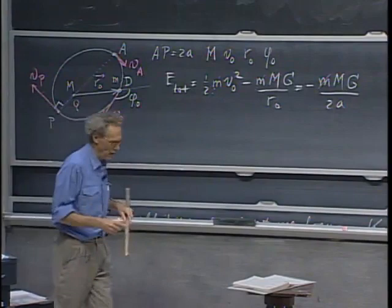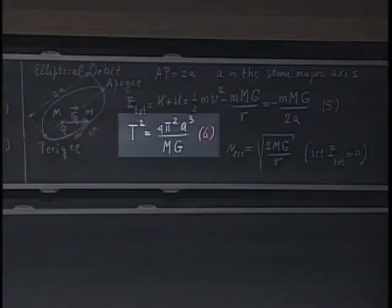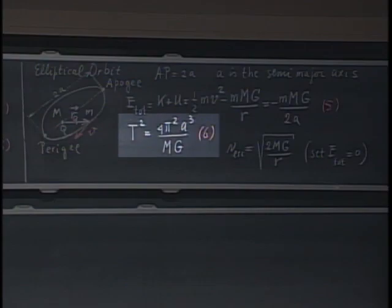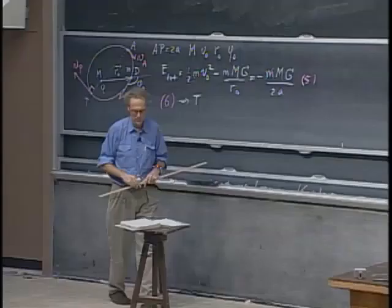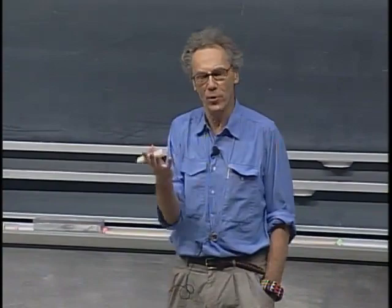Once you have A, apply equation six and the orbital period T pops out immediately, since A is now known. I'll apply this to a specific case: capital M is the Earth (6 × 10²⁴ kg), R₀ is 9,000 km, V₀ is 9.0 km/s, and phi₀ is 120 degrees. Everything else follows from these numbers. The handout with all numerical examples — six pages — is available on the web.